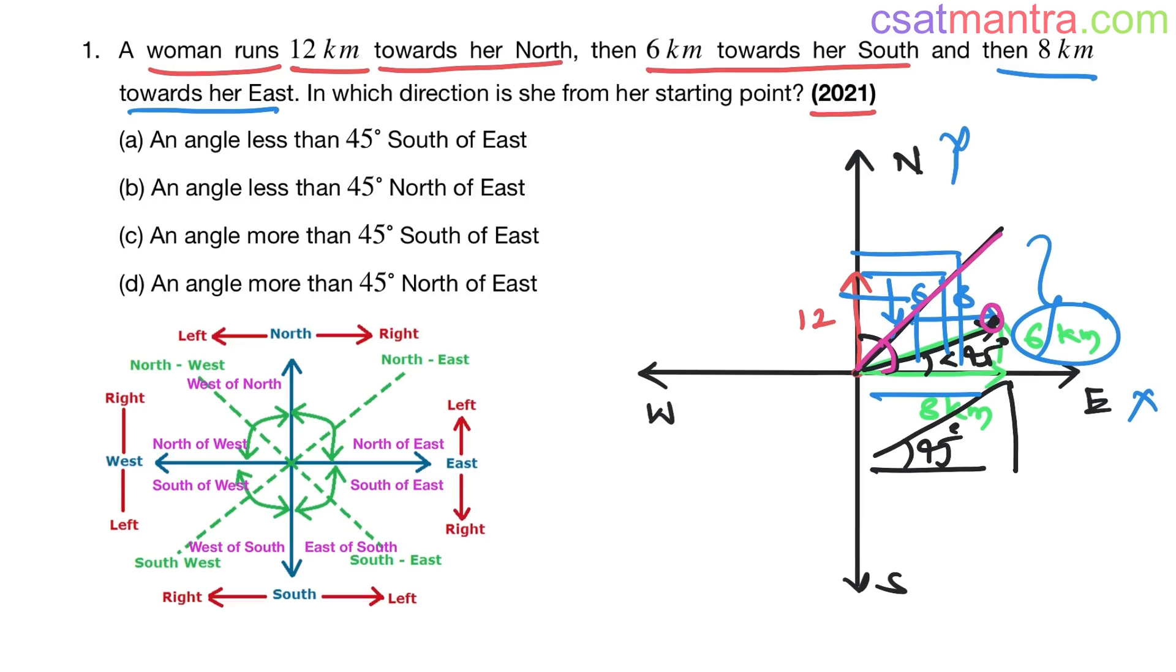This point definitely makes less than 45 degrees. Clear, right? See, this is 6 kilometers only. To be on this line, it should be 8 kilometers. But it is less than 8, so the angle is less than 45 degrees.